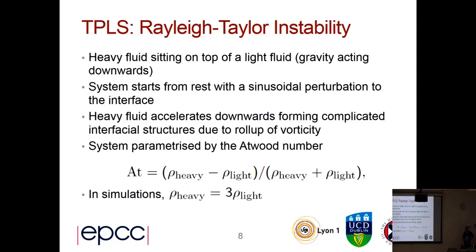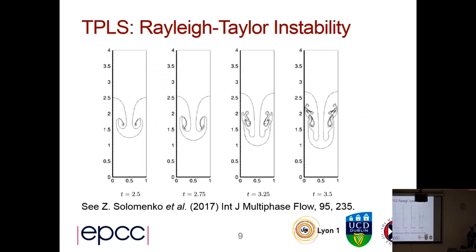The Rayleigh-Taylor instability is set up where you have two fluids with the denser fluid above the less dense fluid. You introduce a perturbation at the interface to get things started, and the heavy fluid accelerates down through the less dense fluid. This particular simulation was done with the denser fluid being three times as dense, and here you can see the instability developing over time — a classic phenomenon in fluid dynamics.